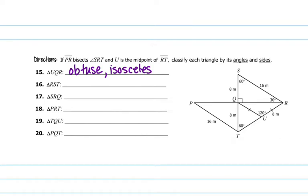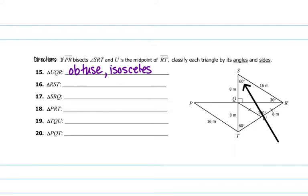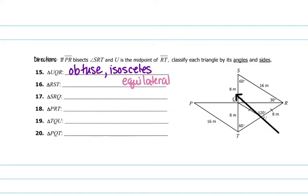And then for RST, which is this big one over here, we can see 60 degrees — that would also be 60 and 60. That means it's equilateral all the way around because this would be 8, 8 — so 16, 16, and 16. And then also the corners, or the angles, would all be 60 degrees.